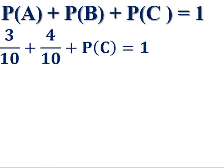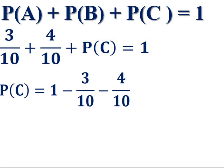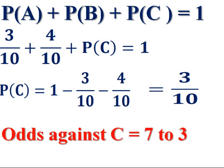P of A is 3 by 10, P of B is 4 by 10, plus P of C equals 1. Therefore P of C equals 1 minus 3 by 10 minus 4 by 10, that is 1 minus 7 by 10, which gives 3 by 10. So C has a probability of 3 by 10, and the chance against C is 7 by 10. The odds against C are 7 to 3. That is our answer: odds against C = 7 to 3.